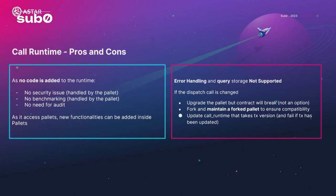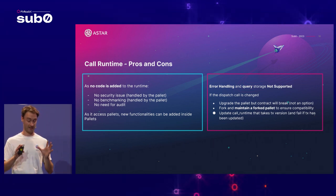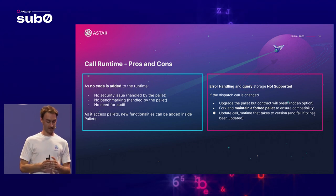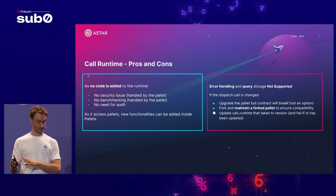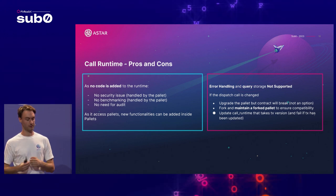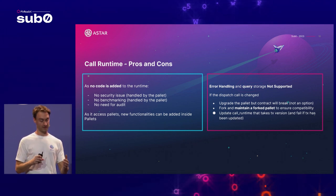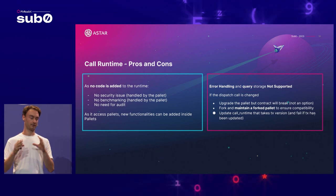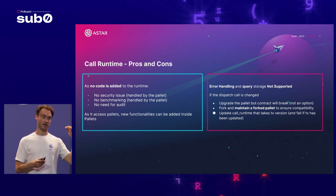The good thing about call runtime is that if you just want your contract to call pallets — for example, transfer and transfer_approved from pallet assets — it's really easy because no code is added to the runtime, meaning no audit, no security issues, and no benchmarking to handle. Also, if you want custom logic only accessible from smart contracts — for example, on Astar we implemented XCM for our testnet using call runtime — you create a companion pallet containing all the call logic accessible to the contract, then add it to the call filter.